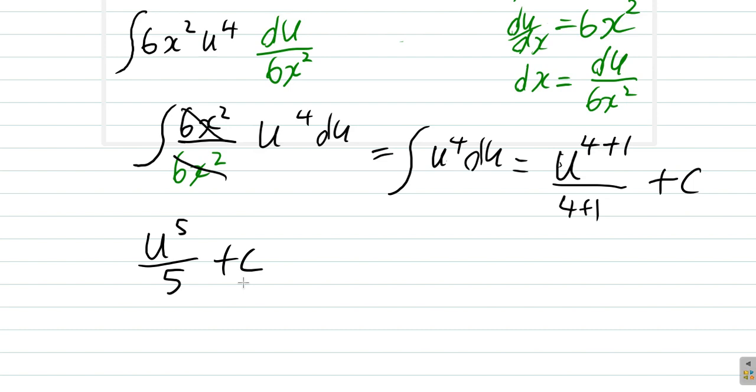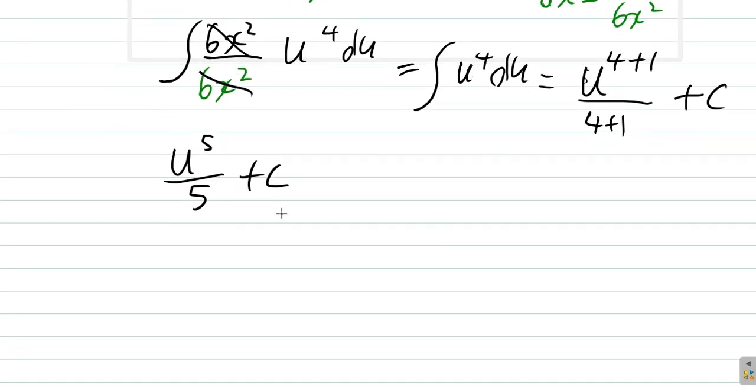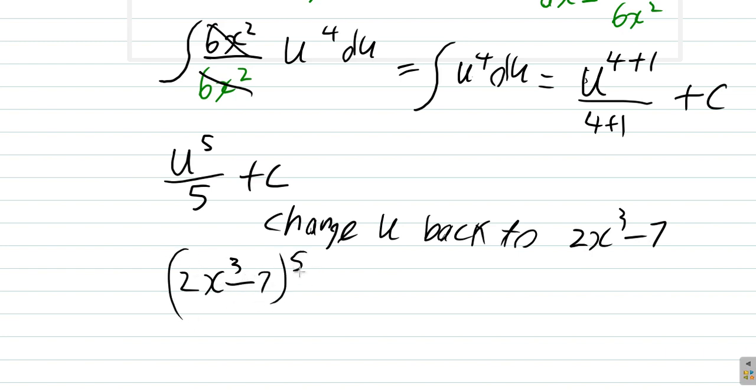But the question is what are you going to happen now? When you do this, remember I actually started with u. And you say u is 2x cubed minus 7. So you're going to change u back to 2x cubed minus 7. Remember you did call 2x cubed minus 7, u. So now that you're done with u, the people didn't give you u, they gave you x. So you rewrite the answer in x. So you see 2x cubed minus 7 raised to the power of 5 over 5 plus c. And that's the answer.